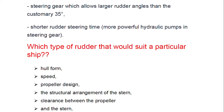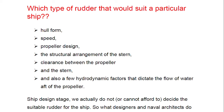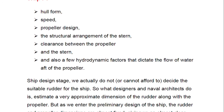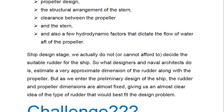Which type of rudder suits a particular ship depends on factors such as hull form, speed, propeller design, the structural arrangement of the stern, clearance between the propeller and the stern, and hydrodynamic factors governing water flow aft of the propeller. At the design stage we do not decide the final rudder. Designers and naval architects first estimate approximate dimensions; as the preliminary design develops, rudder and propeller dimensions are almost fixed, giving a clearer idea of the rudder type that will best fit.